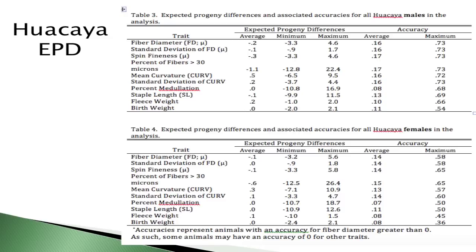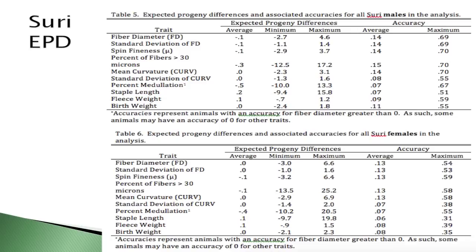Looking at Huacaya EPD summary statistics — averages, minimums, and maximums — in the last two analyses we started sorting out males and females, and we do this for Suri as well. Sires tend to sort themselves out because we have more information and they have higher accuracy, giving a better spread in the EPDs. We split males and females so you can see where your animals rank within each sex. On average, males tend to have more accuracy than females because they produce so many more progeny.